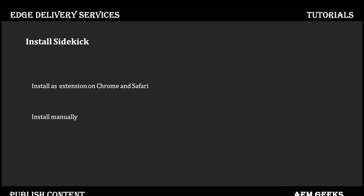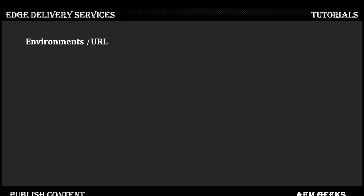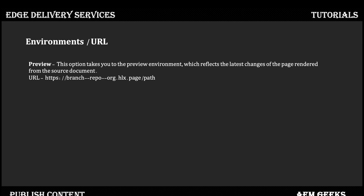This extension is not available for other browsers, but there is a manual way to install it in any browser. As part of this tutorial I'll cover only the official extension, because the purpose is to help you understand the publish process. Later in this series when I talk about Sidekick in detail, we'll cover the manual process as well. With Sidekick you can switch environments, publish, unpublish, preview, and delete content. There are three URLs — one for preview, using your branch, repo, username, and path.